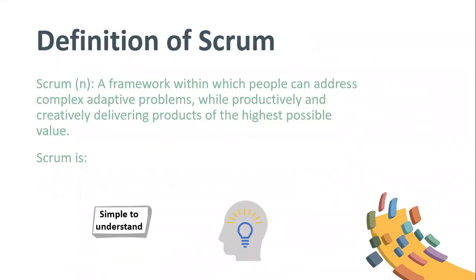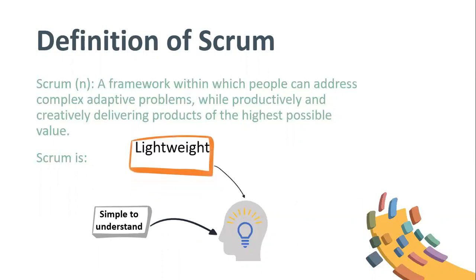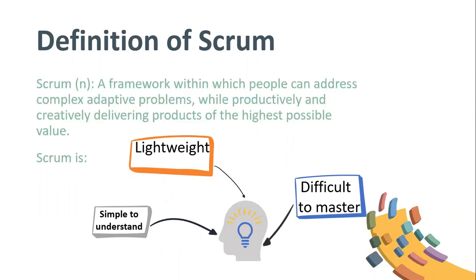Definition of Scrum: a framework within which people can address complex, adaptive problems while productively and creatively delivering products of the highest possible value. Scrum is simple to understand, lightweight — and watch this — difficult to master. Contrary to what people think, Scrum is not easy to master. It's simple, but it's hard to master. It requires discipline.